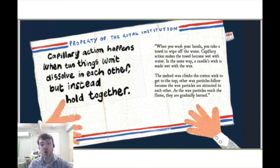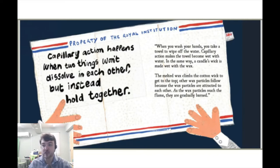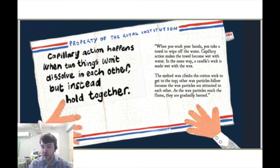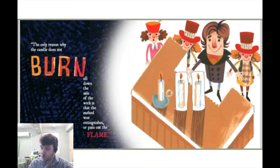Capillary action happens when two things won't dissolve in each other, but instead hold together. When you wash your hands, you take a towel to wipe off the water. Capillary action makes the towel become wet with water. In the same way, a candle's wick is made wet with the wax. The melted wax climbs the cotton wick to get to the top. Other wax particles follow because the wax particles are attracted to each other. As the wax particles reach the flame, they are gradually burned. The only reason why the candle does not burn all down the side of the wick is that the melted wax extinguishes, or puts out, the flame.